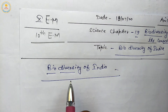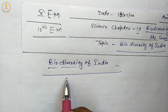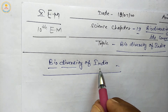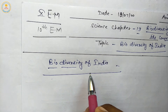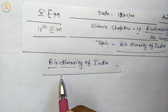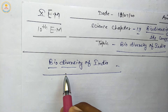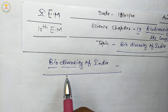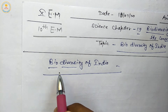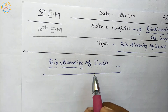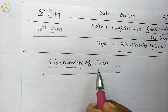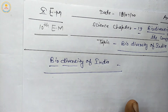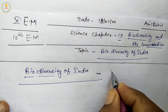Bio means life, diversity means variation. The variation among living beings in India is called Biodiversity of India. If the variation is among living beings in the whole world, it is called global biodiversity. The variation among living beings in Rajasthan state is called Biodiversity of Rajasthan.